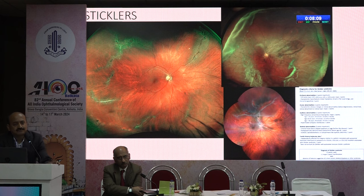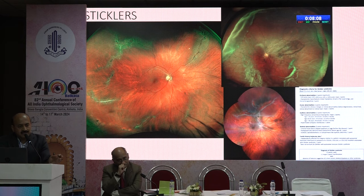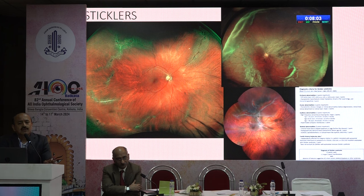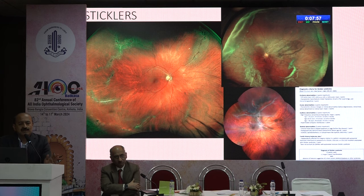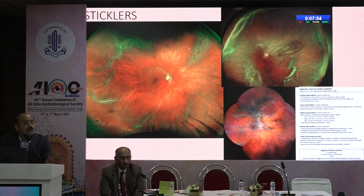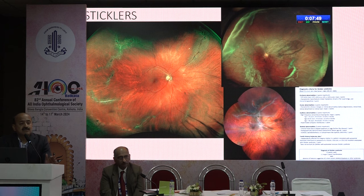The next condition is when you examine the fundus and see floaters with multiple lattice degenerations. When the lattices are very irregular, radial, paravascular, multiple, and oblique — not necessarily circumferential — they indicate a serious vitreoretinal disorder.